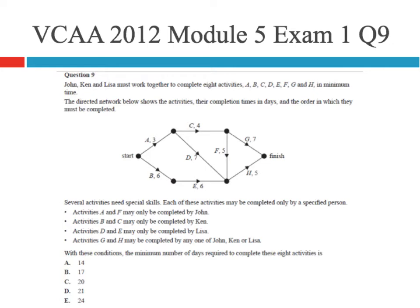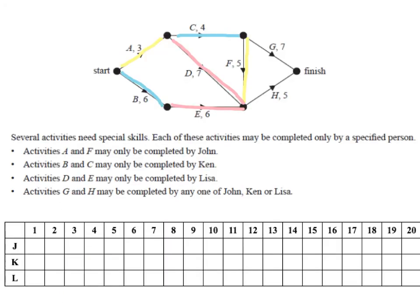So if we look to the next slide, here you can see I've highlighted the activities for each person. So John, A and F highlighted in yellow, Ken, B and C highlighted in blue and then Lisa, D and E highlighted in pink. So it just allows you to keep track of who has to do what.